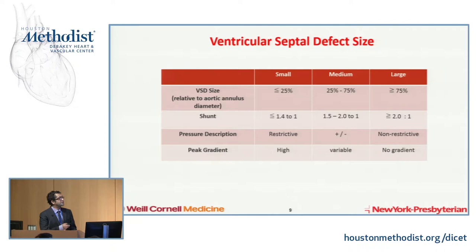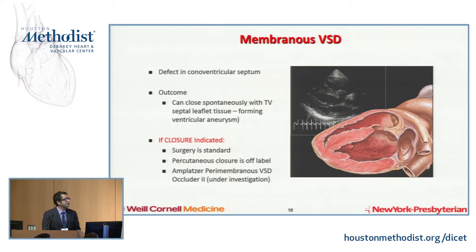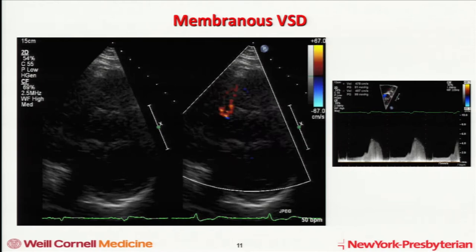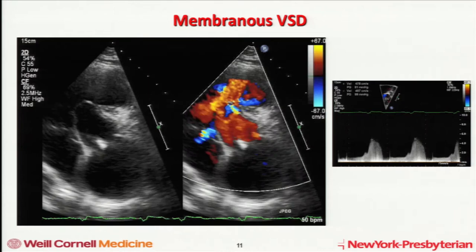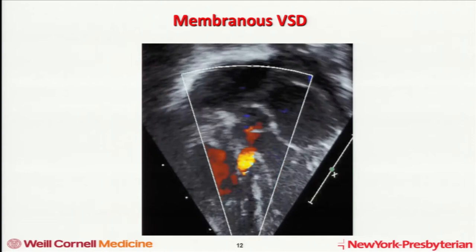When looking at membranous VSDs, if closure is indicated, surgery is going to be standard. Percutaneous closure is definitely off-label, though there is a device being tested called the perimembranous VSD occluder 2, still in preliminary stages and not yet approved. Here in the parasternal short-axis view you can see color flow right close to the tricuspid valve from left to right — consistent with a membranous VSD. This is another membranous VSD in an apical five-chamber view showing left-to-right flow right below the aortic valve, where the membranous region is located.